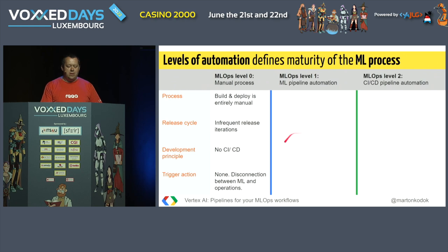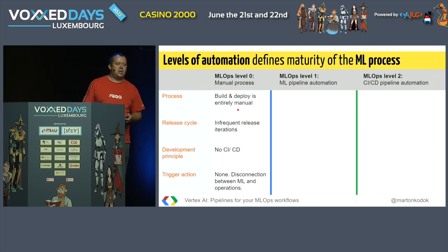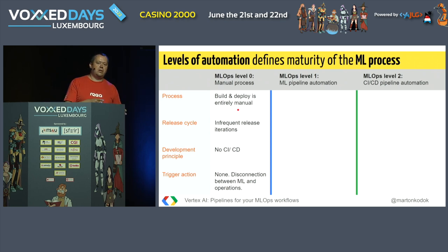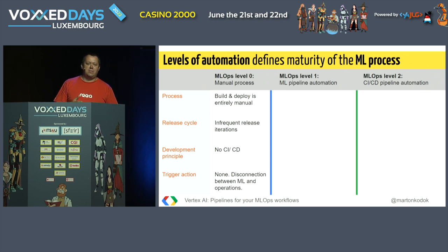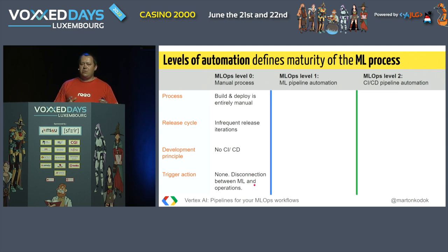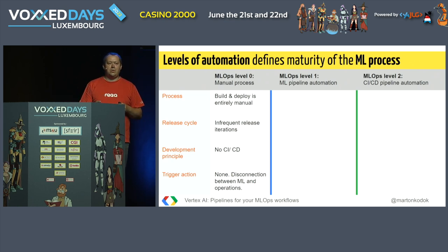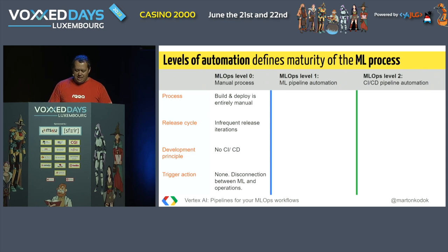When we talk about the manual process, the build and deploy is entirely manual. Probably your organization at some point had all machine learning deploys manually triggered by someone. It had infrequent release iterations, no CI/CD, and a disconnection between machine learning and operations — whether you have an operations team, a DevOps team, or a sysadmin team. This is what I call the manual process.